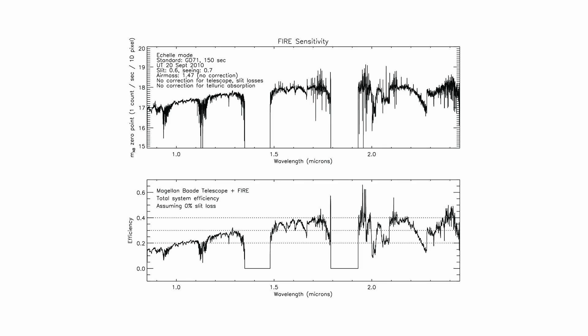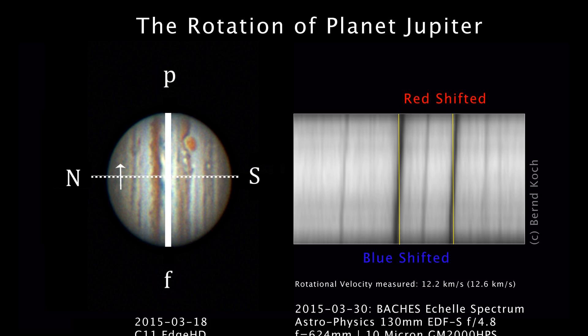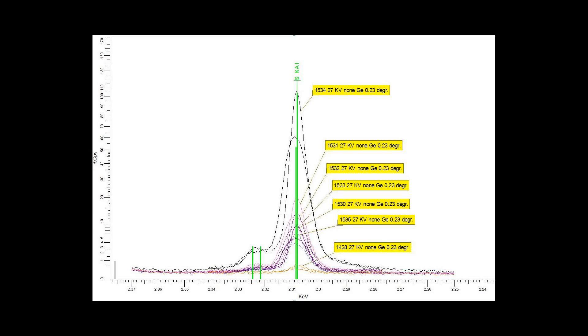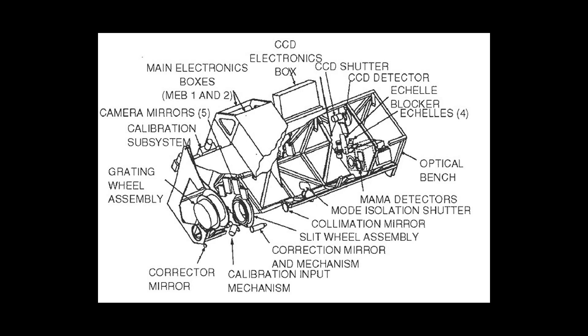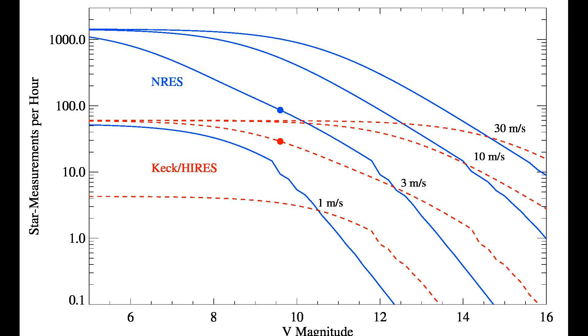In Echelle gratings, however, this behavior is deliberately used, and the blaze is optimized for multiple overlapping higher orders. Since this overlap is not directly useful, a second, perpendicularly mounted dispersive element, grating or prism, is inserted as an order separator or cross-dispersor into the beam path.